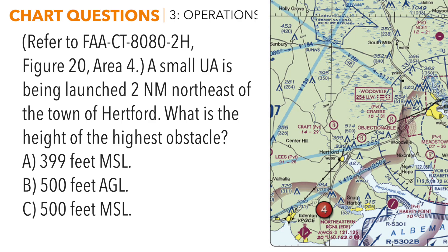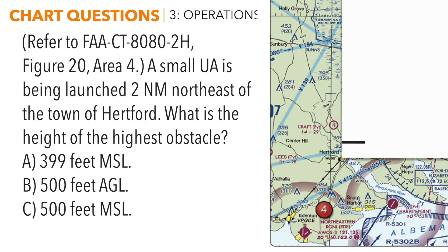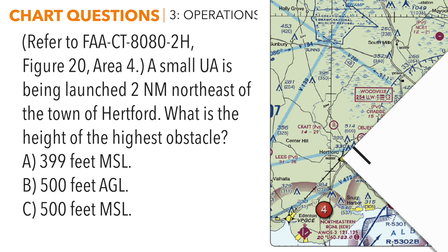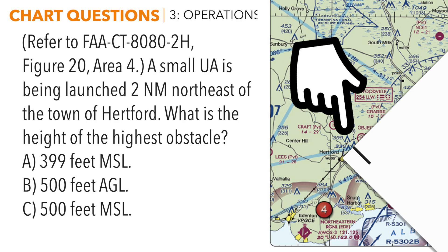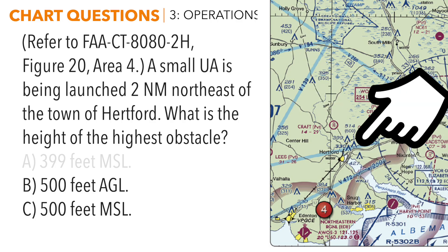Put one end of the measurement on Hertford, here's two nautical miles north, then rotate it to the east so we're northeast. This confuses many people because two answer options are in this small area. There is a 399-foot MSL tower about three nautical miles almost directly north of Hertford, but we want towers two nautical miles more to the east. Going east, we find 514 feet MSL and 500 feet AGL — the top number is MSL height and the bottom is AGL. So the correct answer is B, 500 feet AGL.